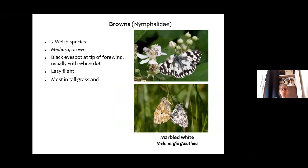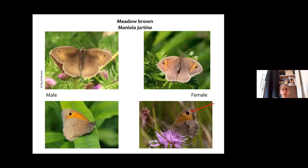Onto the browns — starting with the brown that isn't brown. These are species with a lazy, elegant flight, most found in tall grass. The marbled white is gorgeous and unmistakable — a fabulous butterfly with a very strange distribution. It feeds on grasses but is missing from lots of sites that look suitable, then pops up in other places. One of my favourites.